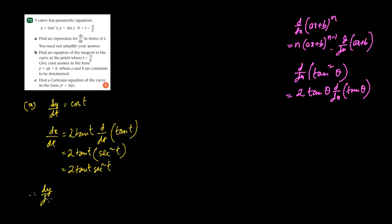So therefore, dy by dx is dy by dt which is cos t, divided by dx by dt which is 2 tan t sec² t.